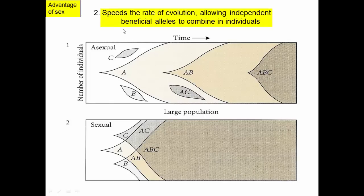The second advantage of sex is that it speeds the rate of evolution of a population by allowing independent beneficial alleles to combine. We have two diagrams here. In the asexual population, capital A, B, and C alleles are novel beneficial alleles. A mutant with the capital A allele arises and increases in frequency; then a capital C mutation occurs and increases; then the B mutation occurs. But these alleles are now competing with each other, and only one can win, pushing the other good alleles out of the population.